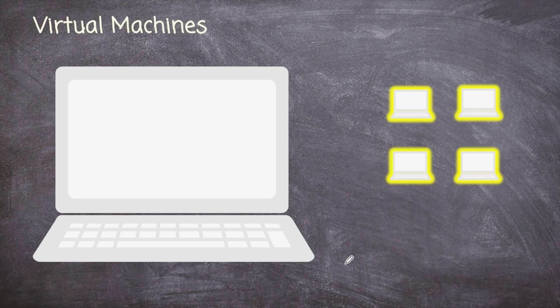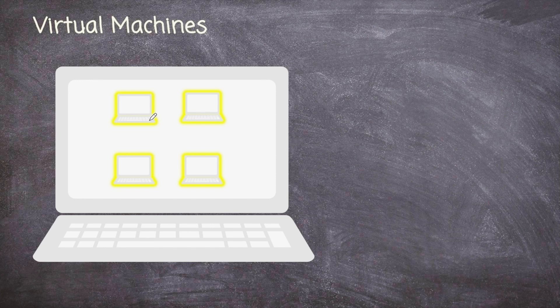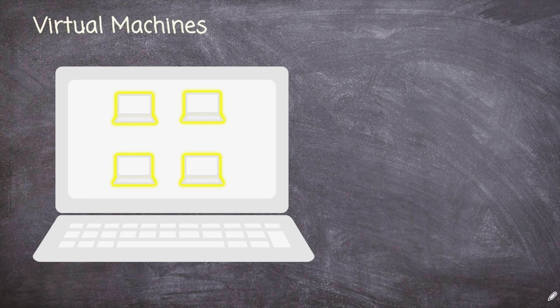Now we have some software that we can load on this physical machine that will allow us to create these virtual machines. And how it does that is it emulates. It basically imitates a CPU, it imitates RAM, it imitates the USB port that you have your mouse plugged into, for example. And that allows us to run these virtual machines on physical machines.